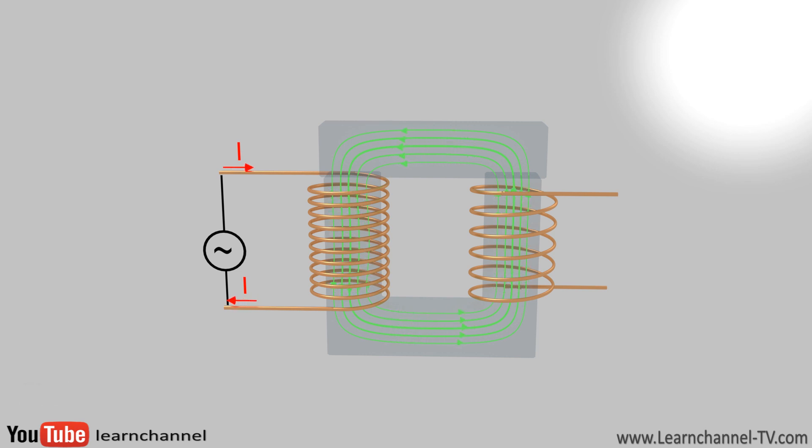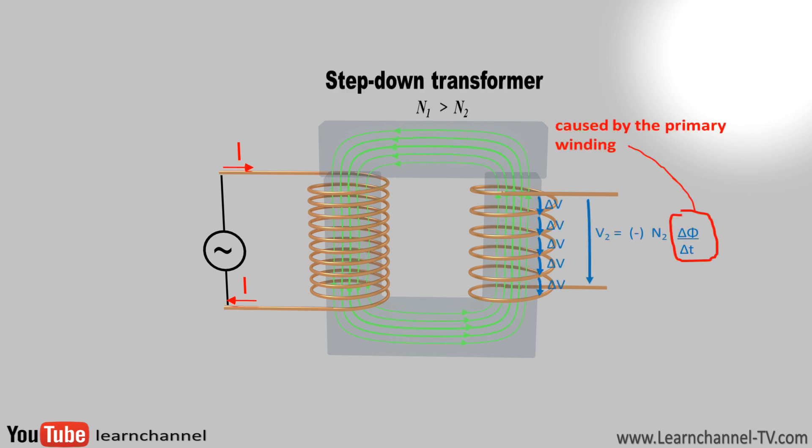This EMF induces an individual voltage in each turn. Since the EMF is the same in both coils, the voltages per turn are also the same. The output voltage must be the sum of the individual voltages per turn.